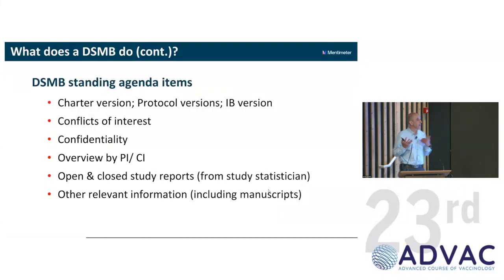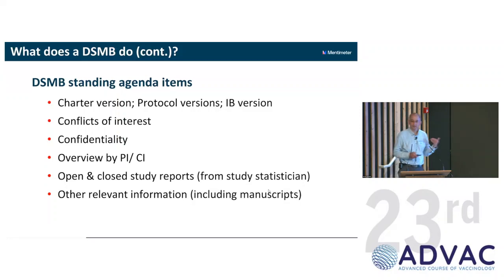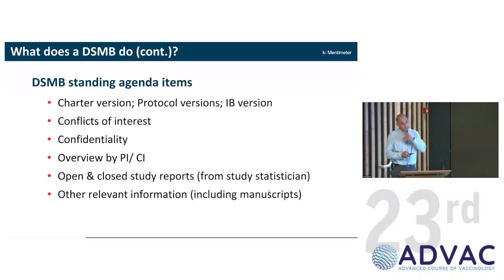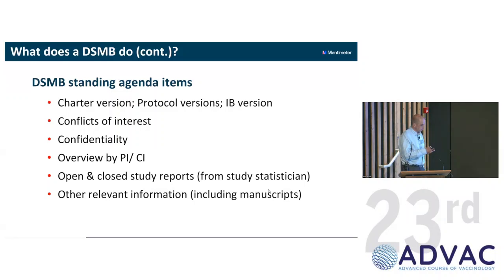Standing agenda items for a DSMB meeting include making sure you have the appropriate versions of the charter, protocol, and investigator brochure. This may sound trivial, but I've frequently been at DSMB meetings where the protocol has changed without being informed. It's important to check on these at the start, declare any conflicts of interest — which may change over time — receive an overview from the principal or chief investigator, and then consider the open and closed reports prepared by the study statistician and any other relevant information, such as manuscripts generated from the trial.